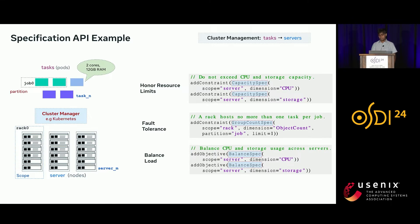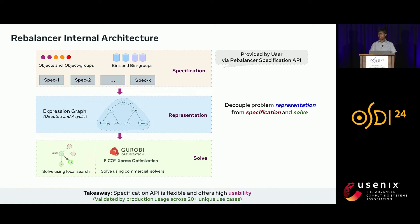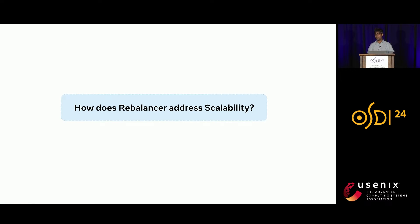Once specs are specified using the specification API, Rebalancer internally translates them into a directed acyclic expression graph. This expression graph can then be translated into a MIP model and solved using commercial solvers, or used directly for our scalable local search algorithm. The key idea is that we have decoupled problem representation from specification and solving — allowing us to add more specs or make changes without touching the core solving algorithm. The specification API is flexible and offers a high degree of usability, validated in production by 20+ unique use cases. Next, we switch to scalability.